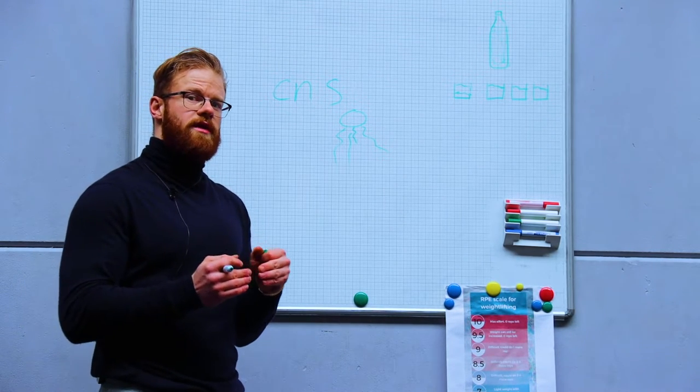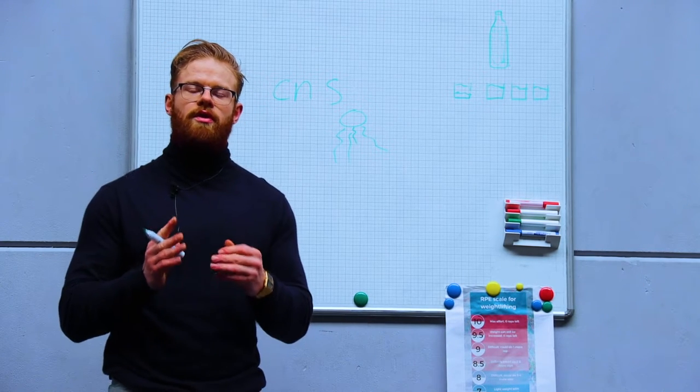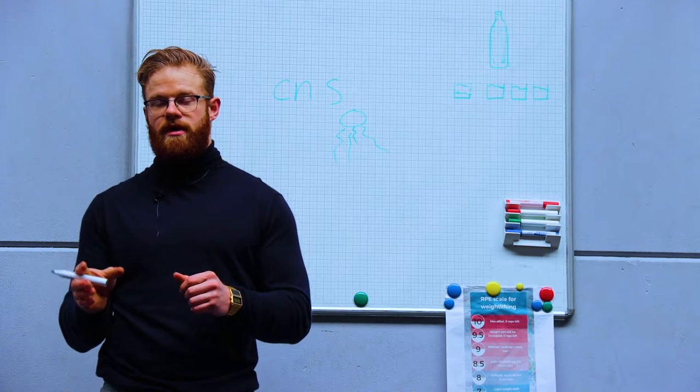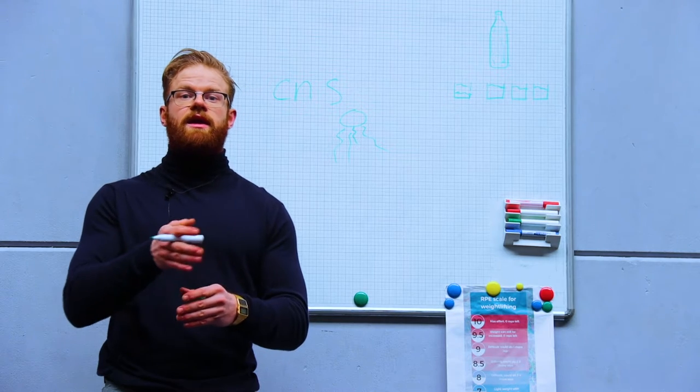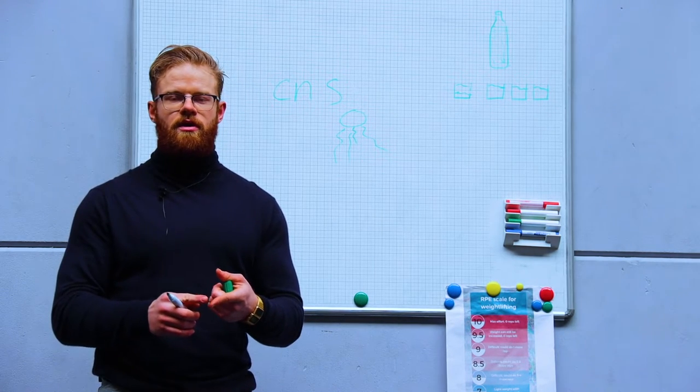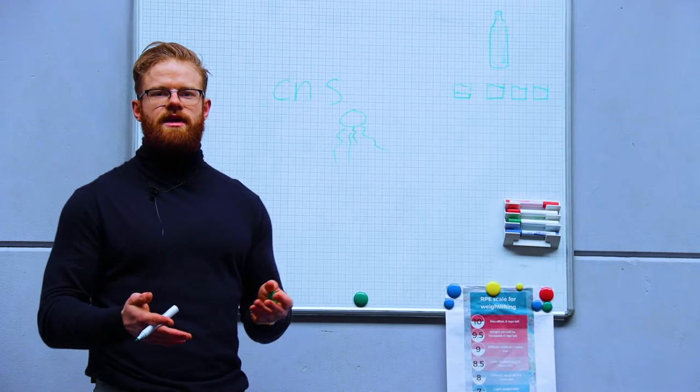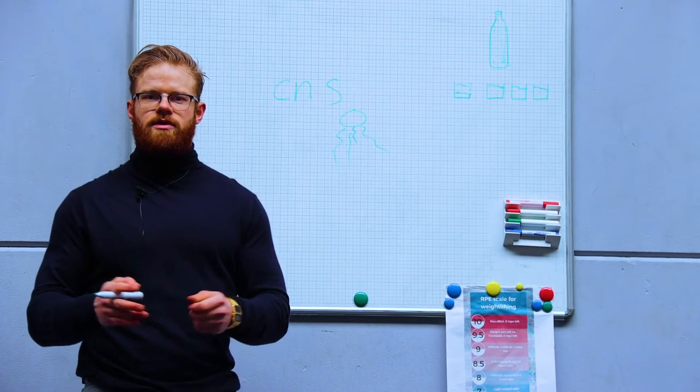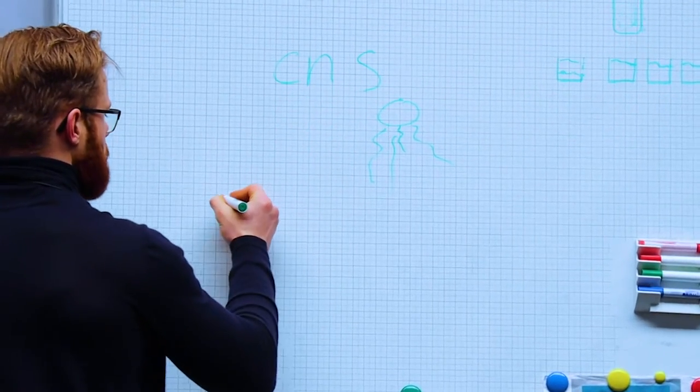That means that we don't want to start off with a lot of isolation work and then end up with a big movement. We want the big movement to be at the start of the session and then end up with accessory stuff, isolation drills, or just easy stuff on the CNS—low weights and low requirements for a lot of muscles. We use a single muscle or we do an easy task, so we go from compound to isolation.